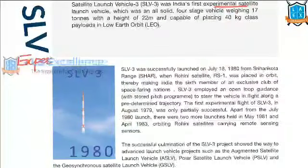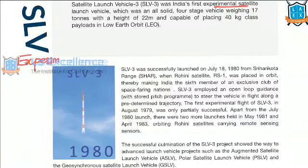SLV and ASLV are experimental satellite launch vehicles. But PSLV and GSLV are developmental satellite launch vehicles, meaning they are the launch vehicles through which we are directly sending our satellites into the orbit. They are not for experiment.